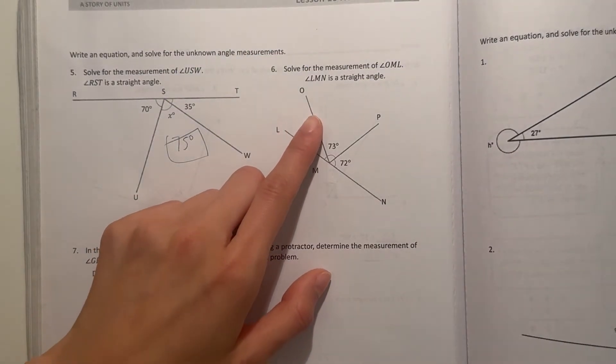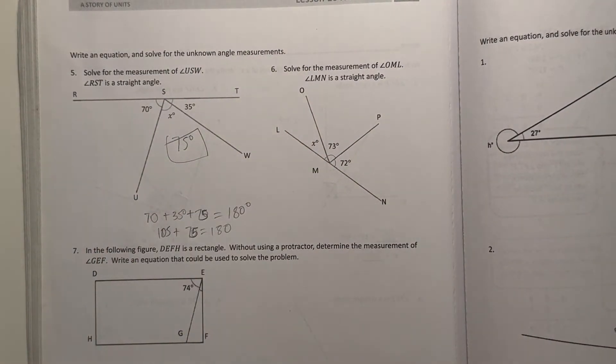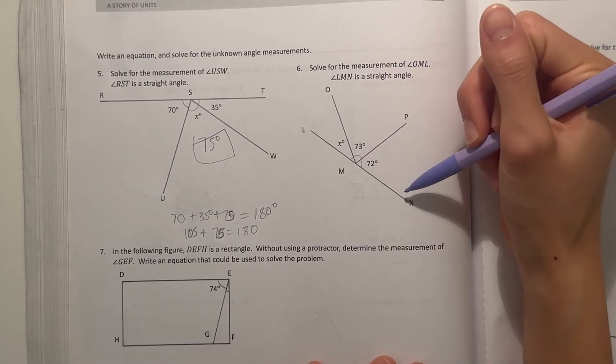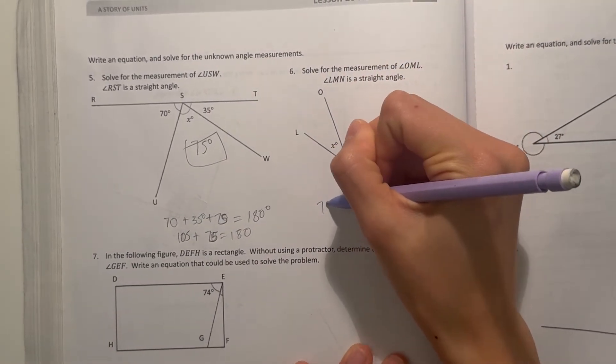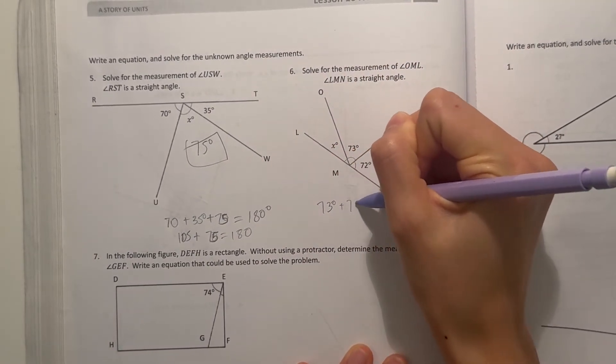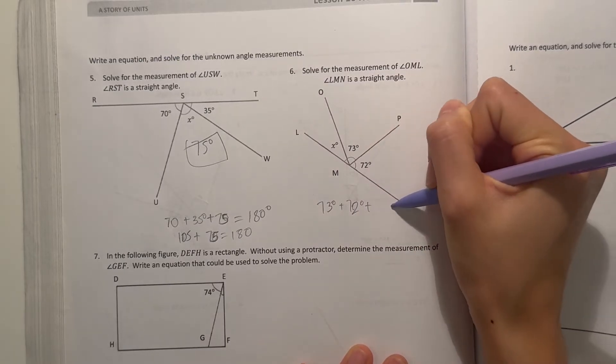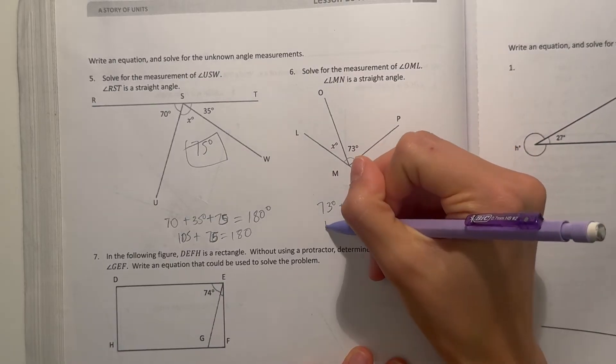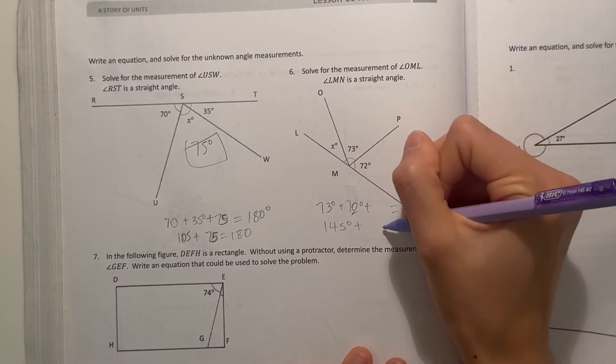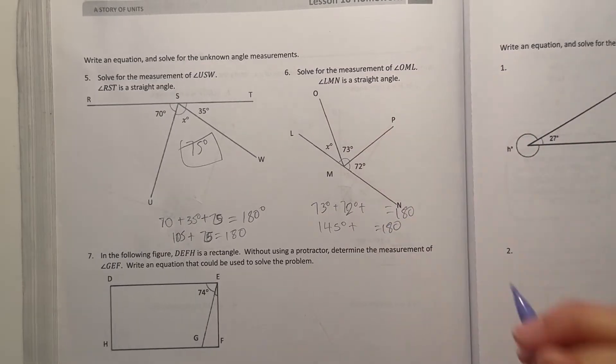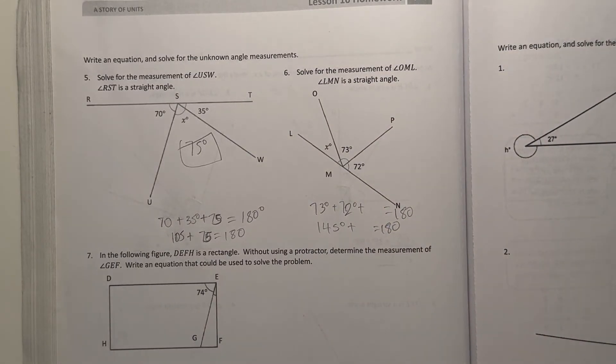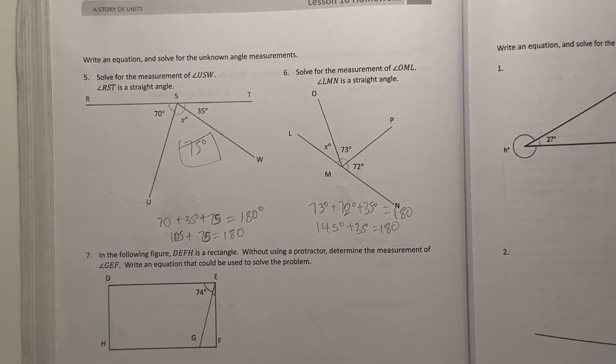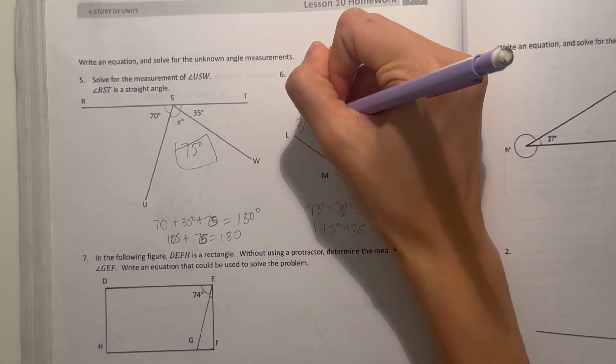And number six, solve for the measurement of angle OML. LMN is a straight edge. So OML, again, 73 degrees plus 72 degrees plus x must add up to 180. 73 plus 72 is 145 degrees plus blank is 180. If we do 180 minus 145, that would be 35. So our answer would be 35 degrees. That means x is 35 degrees.